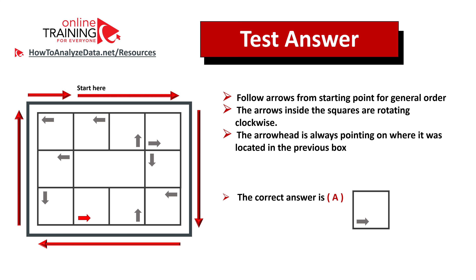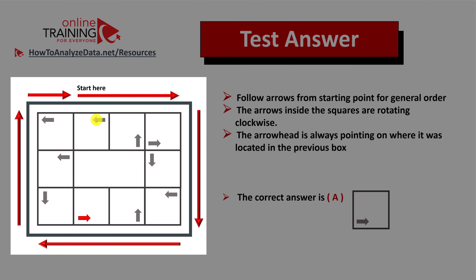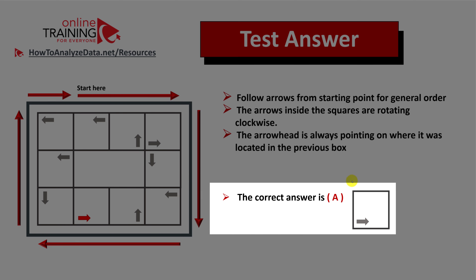There are a couple of tricky parts about this question. Number one is the general flow of squares, and then there is a sequence of arrows inside the squares. The flow starts in the middle of the upper row, not in the corner. You need to follow the red arrows for the general order. The arrows inside the squares rotate clockwise, and the arrowhead for each smaller arrow always points to where it was located in the previous box. So the correct answer is Choice A.